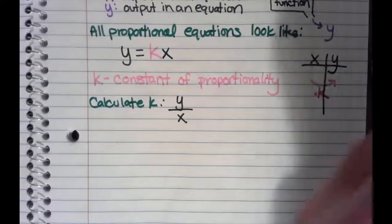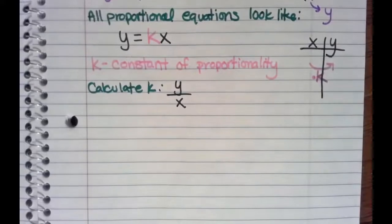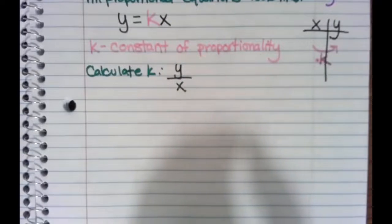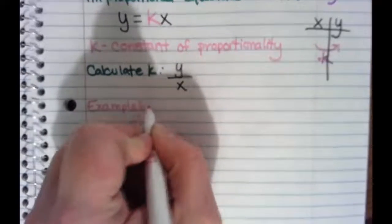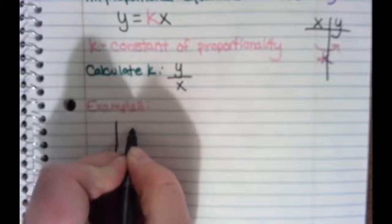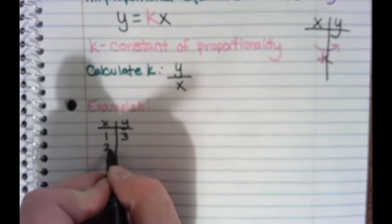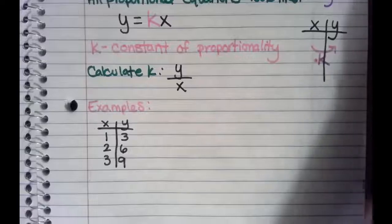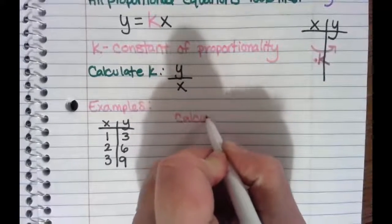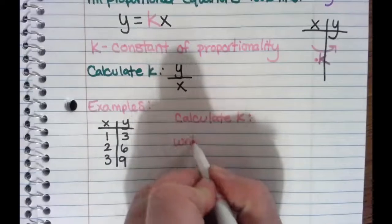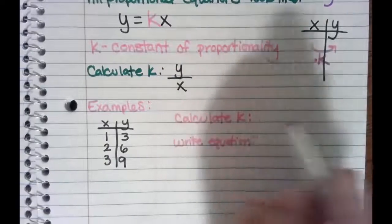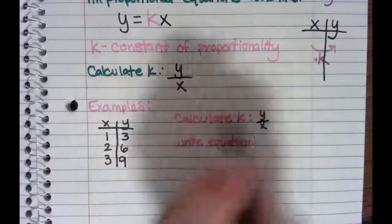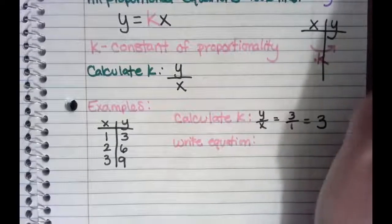So anytime you have a table, we can find K and write the equation. For example, imagine you have this proportional relationship: X and Y are 1 and 3, 2 and 6, 3 and 9. We need to calculate K and then write the equation. We do Y over X — we could do 3 over 1, 6 over 2, or 9 over 3, which all give us 3. So our constant of proportionality is 3.